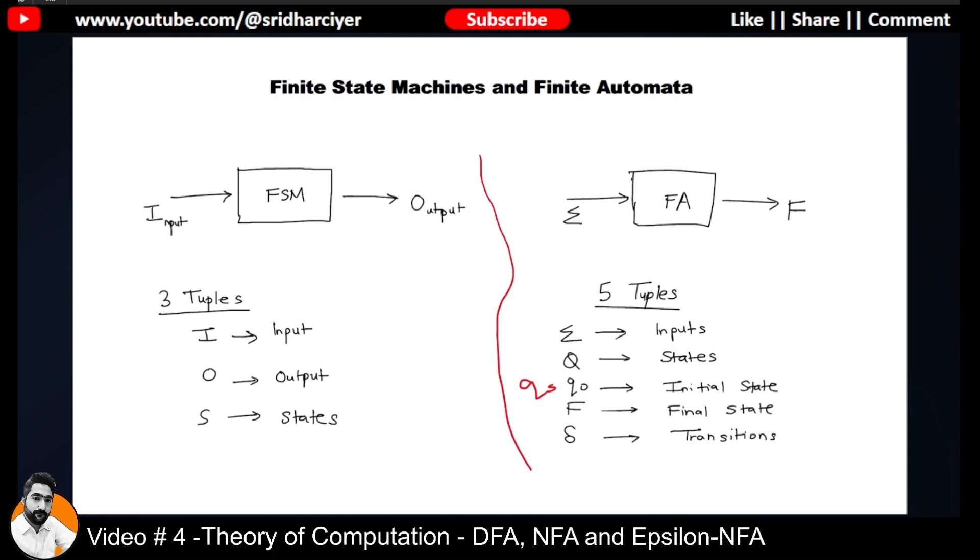Nowadays whenever we say FA or FSM, we can interchangeably use it, but in the exam if a question is typically asked on FSM, you cannot construct an FA. Well, you can, but you won't get the specific marks assigned for that. Why? Because FSM and FA might work almost similar, but the structure is different. As you can see, FSM consists of three tuples only, whereas FA consists of five tuples.